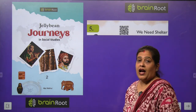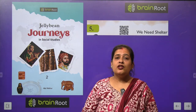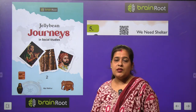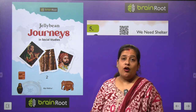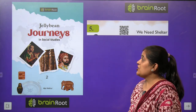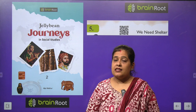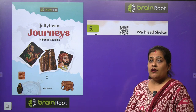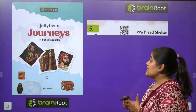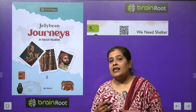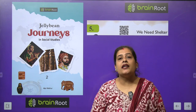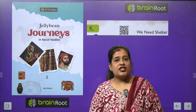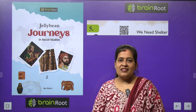Hello my dear kids, how are you? I hope you all are fine. Today we are going to start another chapter of our SST book by Brain Roots series. The name of our book is Jelly Bean Journeys in Social Studies and today we are going to start chapter number 5 and the name of our chapter is We Need Shelter.